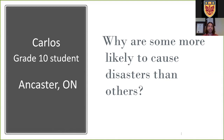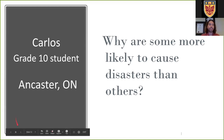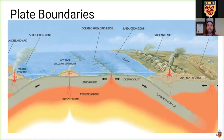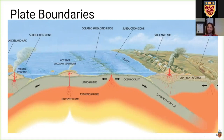Moving on: Carlos, a grade 10 student from Ancaster, asked why some tectonic plates are more likely to cause disasters than others. That has to do with what type of plate boundary we're looking at. We have three types. A divergent plate boundary is where plates move away from each other — these are relatively calm locations. You do get earthquakes as rocks slip and fill the widening gap, but they're not as severe as those at convergent zones.